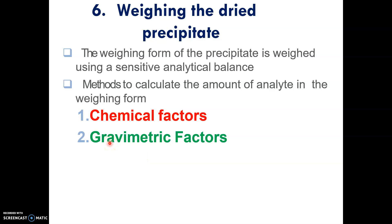This video is about the last step in gravimetric analysis - step C, which is weighing the dry precipitate. The weighing form of precipitate is done using a sensitive analytical balance, and we have two methods to calculate the amount of analyte in the weigh form: the chemical factor and the gravimetric factor.